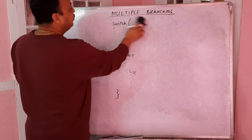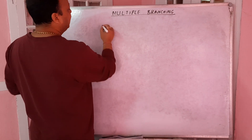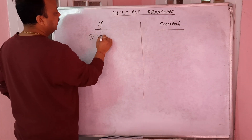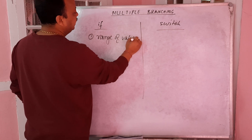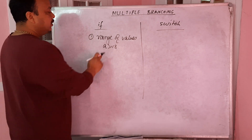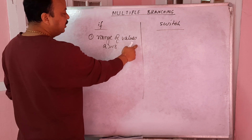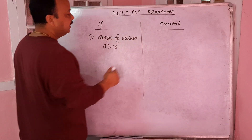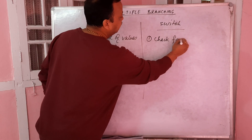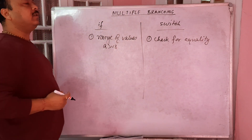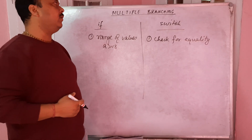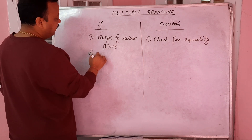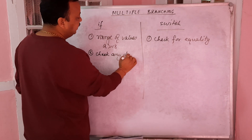Before discussing switch case, let's understand the difference between if-else and switch case. Point one: if can check a range of values - for example, greater than or equal to eighteen, so values like 18, 19, 20, 21 all satisfy. Switch case does not have the capacity to check a range - it can only check for equality. This determines which branching style you should use.